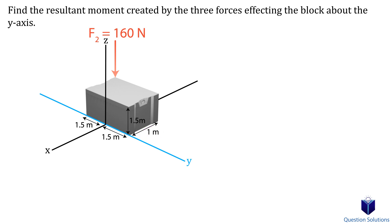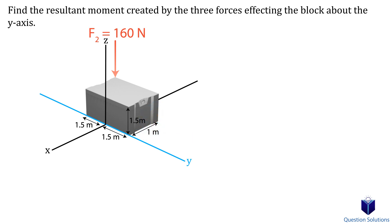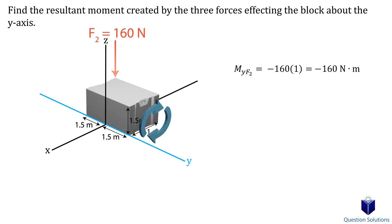Now let's look at force F2. The perpendicular distance to the y-axis from F2 is one meter. We define the positive direction using the right-hand rule: counterclockwise about the y-axis is positive, clockwise is negative. For F2 we have force times perpendicular distance, and since it makes the slab turn clockwise, it's a negative moment.